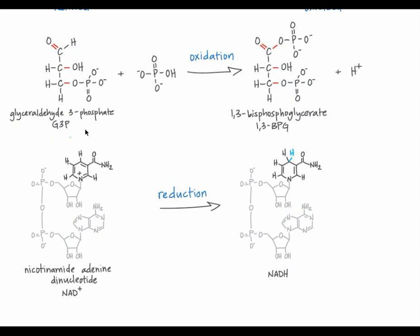So in this step, G3P is oxidized to 1,3-BPG, and NAD plus is reduced to NADH. Along the way, one hydrogen ion is formed, and it dissociates into the cell. This redox reaction is catalyzed by glyceraldehyde 3-phosphate dehydrogenase, or G3PDH. Because the delta G of this reaction is small, the reaction is readily reversible.